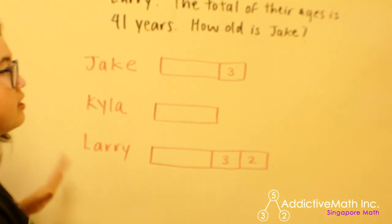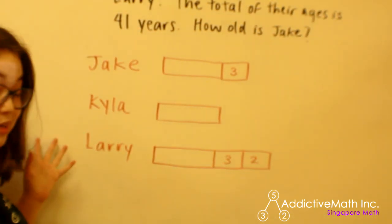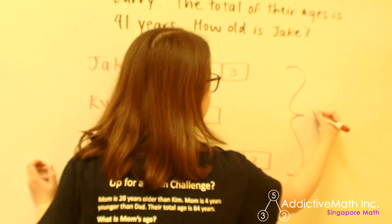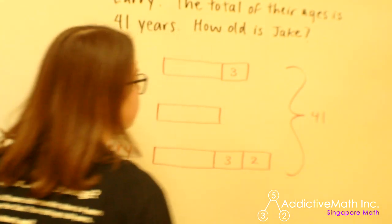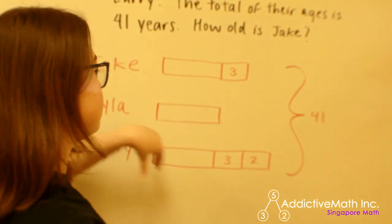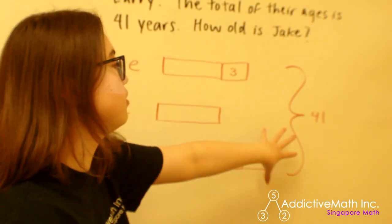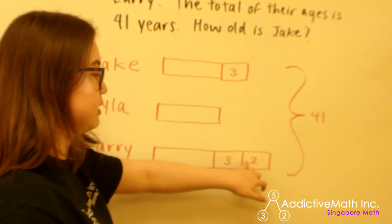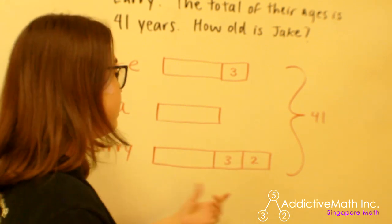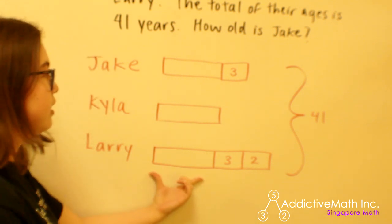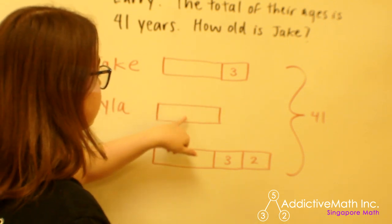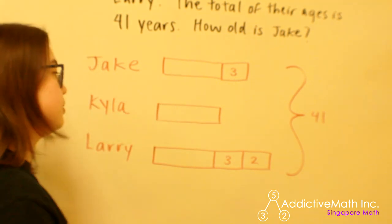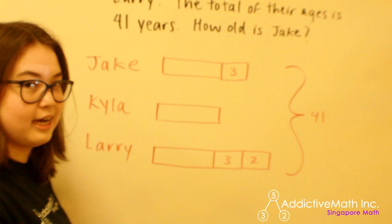It says that the total of their ages is 41 years. I'm going to draw a bracket and write out 41 here to represent that all of these quantities we've drawn out total to 41. Now we have some that are known — this quantity is 2 — and some that are unknown. In fact, our unknown quantities are all the same. In terms of algebra, if we were working this algebraically, that would mean we'd have one variable that appears three times.